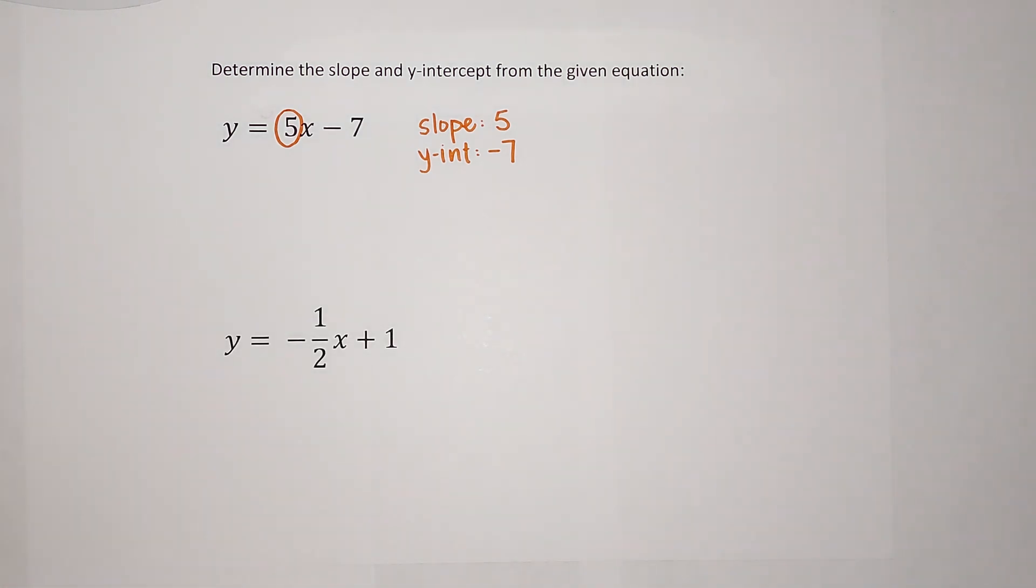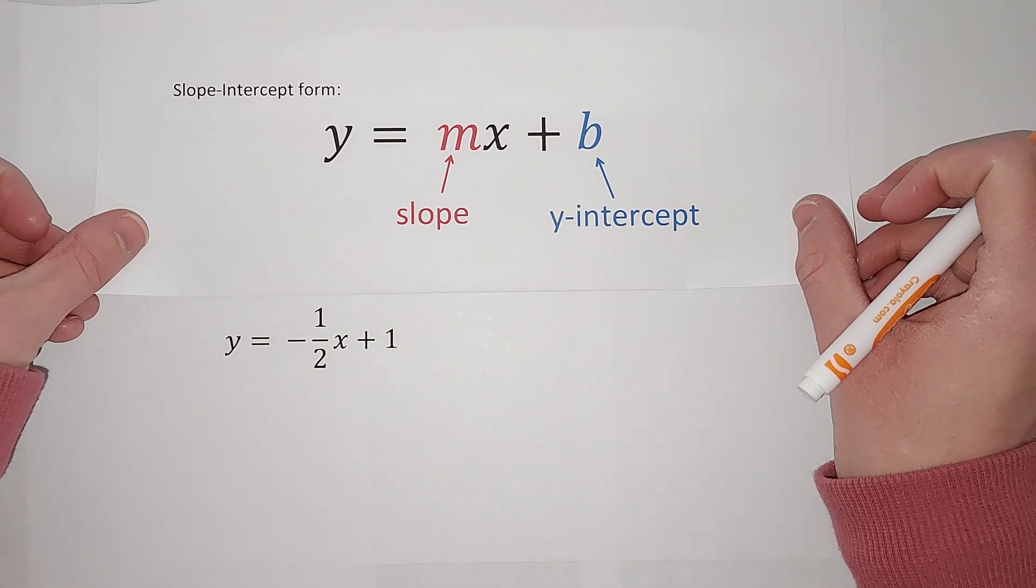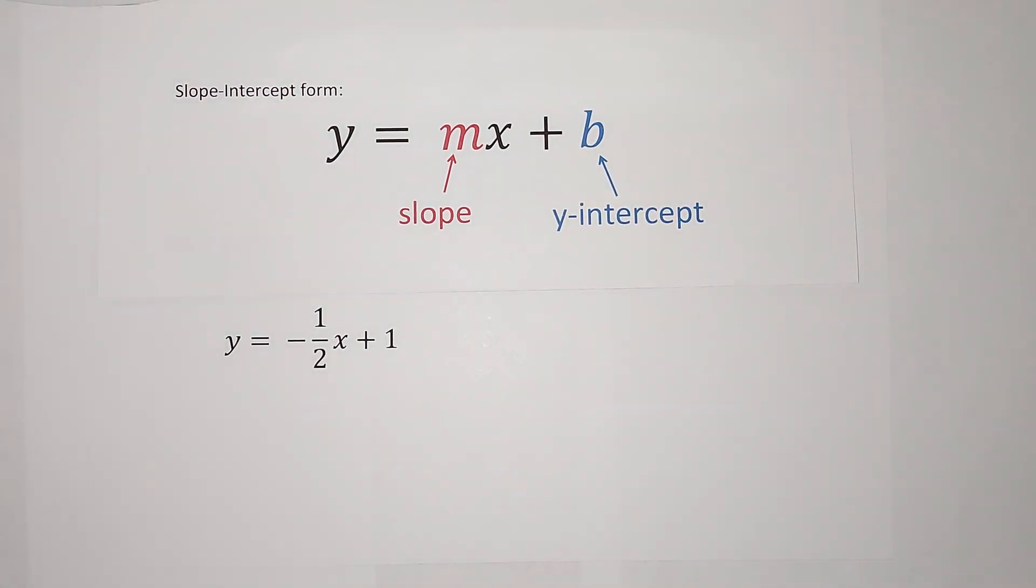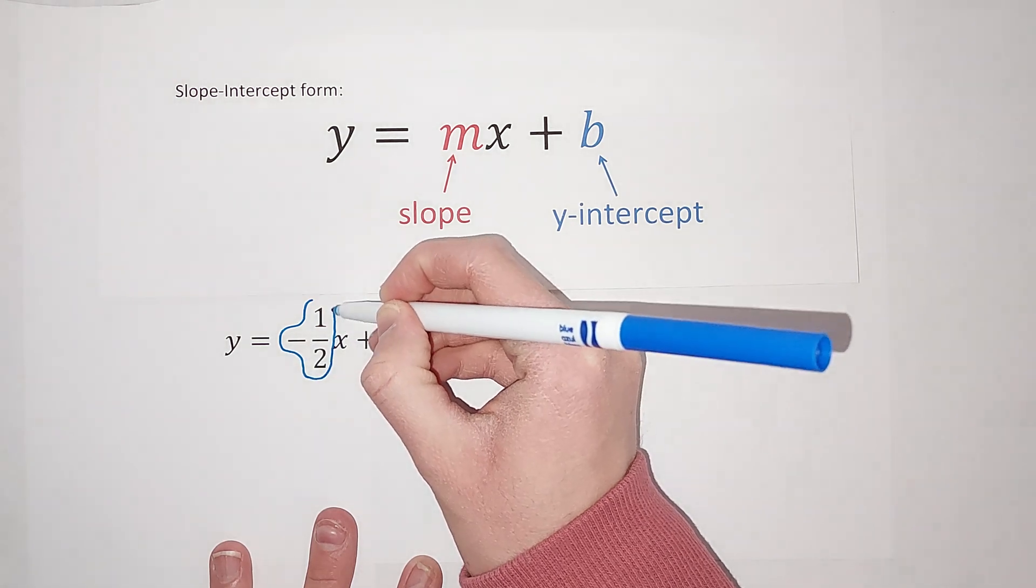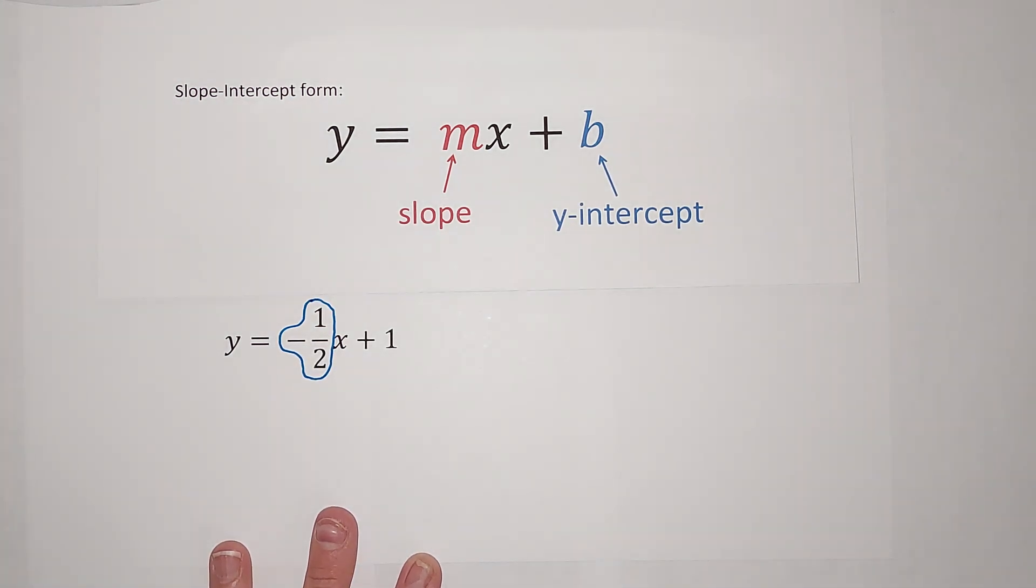Let's look at our second one here. Again, make sure that your y is alone. In this case, it is, so I don't have to change anything around. If it wasn't alone, I'd do what I needed to do to get it alone. But we already have y alone, so whatever is in front of my x is my slope.